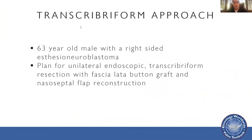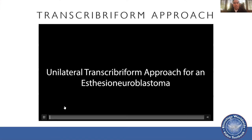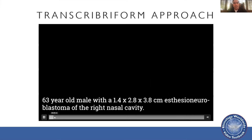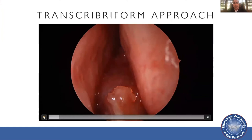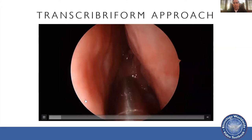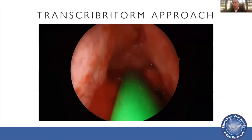As a typical example of a transcribriform approach: a 63-year-old male with a right-sided esthesioneuroblastoma. We planned a unilateral endoscopic transcribriform resection with fascia lata button graft and nasal septal flap reconstruction. Here's preoperative imaging — we can see the mass in the nasal cavity with some post-obstructive mucus in the frontal sinus but no gross involvement of the cranial base. Endoscopically, we try and work around to identify the attachment point early. For a tumor this large, we often need to start with endoscopic debulking, using the suction bovie to shrink down the capsule and cut down on bleeding.